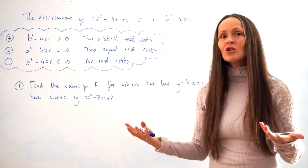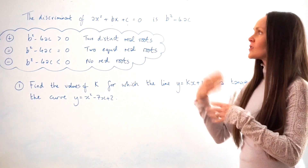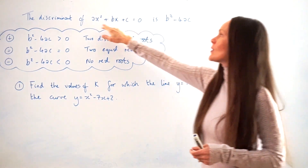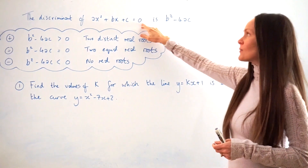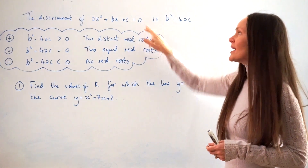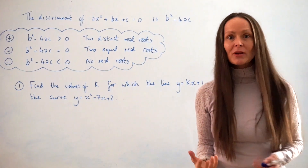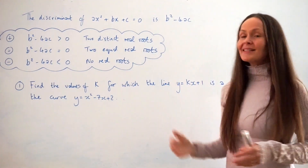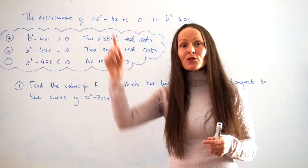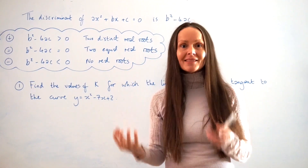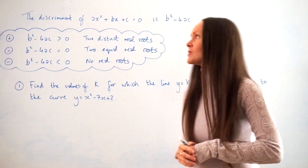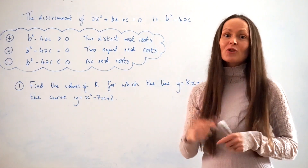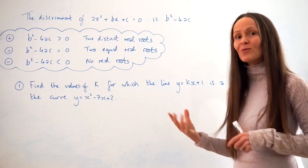When you solve your simultaneous equations, you come up with an equation in a certain form. If you work out the discriminant of that equation — b squared minus 4ac — it tells you how many times the straight line and the curve intersect with each other, i.e. how many solutions there are. If you haven't heard of the discriminant before, please watch my other video and then this will make a lot more sense.